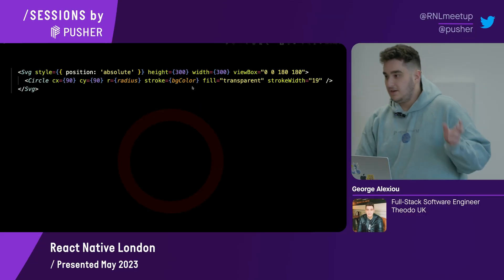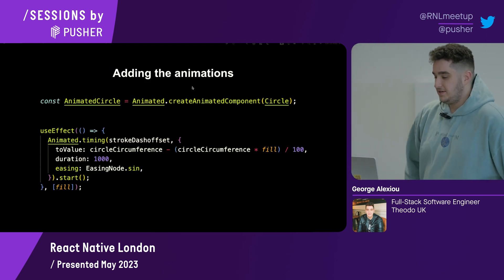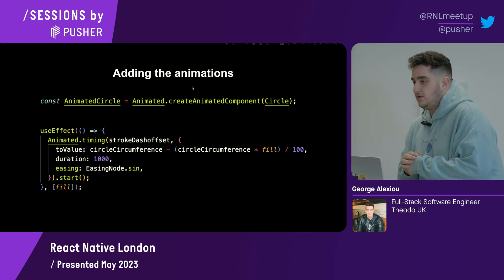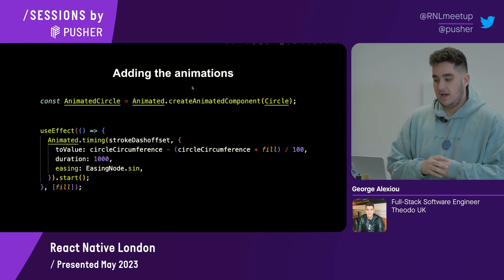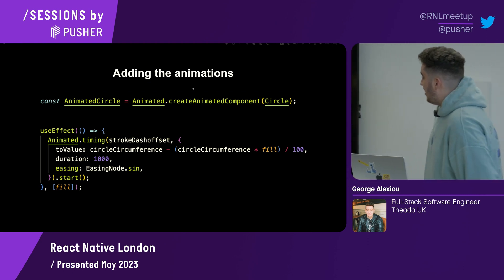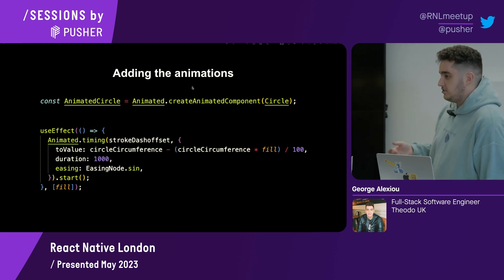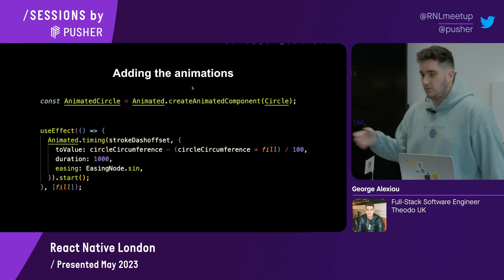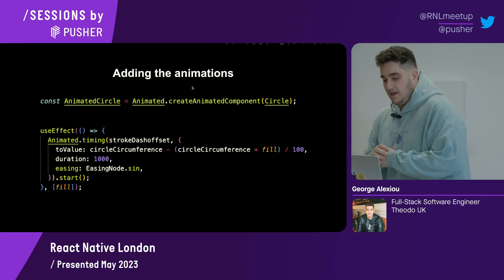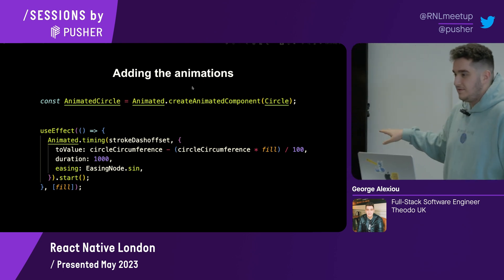From here we need to build the animations. To add the animations, we need to tap into React Native Reanimated. The way you do that is you have to create an animated component. What I've done is create an animated circle — it uses the createAnimatedComponent function and we pass in the component we want, which is the React Native SVG circle. Then we declare our animation settings here.